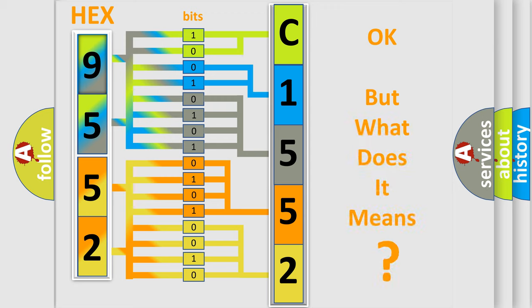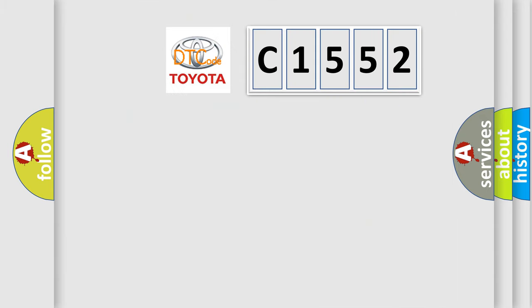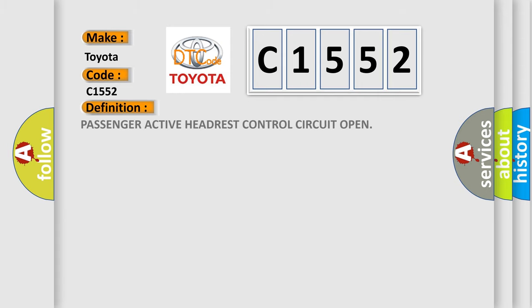The number itself does not make sense to us if we cannot assign information about what it actually expresses. So, what does the Diagnostic Trouble Code C1552 interpret specifically for Toyota car manufacturers? The basic definition is Passenger Active Headrest Control Circuit Open.